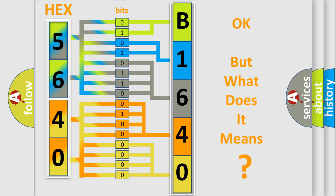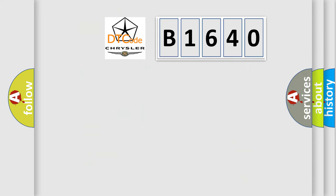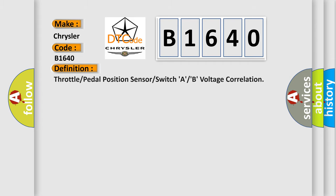We now know how the diagnostic tool translates the received information into a more comprehensible format. The number itself does not make sense if we cannot assign meaning to what it actually expresses. So, what does the diagnostic trouble code B1640 interpret specifically for Chrysler car manufacturers? The basic definition is: Throttle or pedal position sensor or switch A or B voltage correlation.